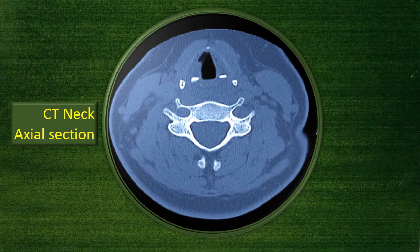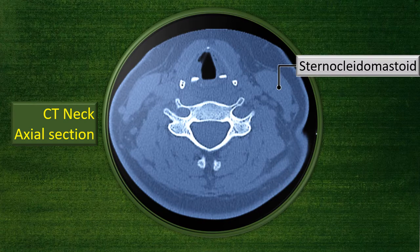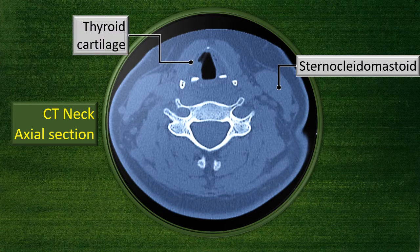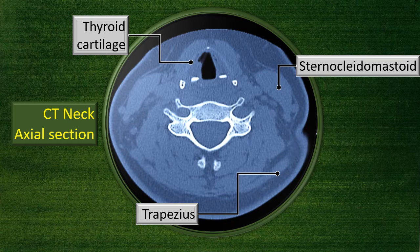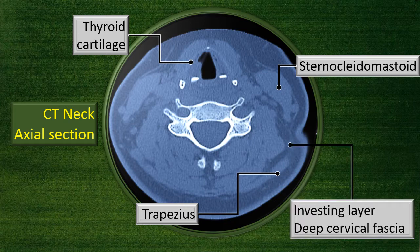No discussion of gross anatomy is complete without taking note of imaging modalities. Here is a CT scan axial section — a horizontal section. The sternocleidomastoid muscle and the thyroid cartilage give a rough estimate of the level. Trapezius is seen posteriorly. Connecting the posterior border of the sternocleidomastoid with the anterior border of the trapezius, you can see a thin white line — that is the investing layer of deep cervical fascia.